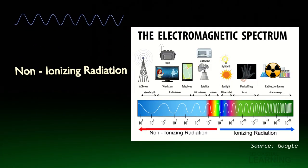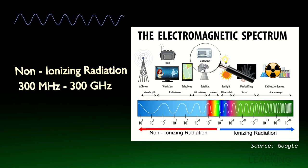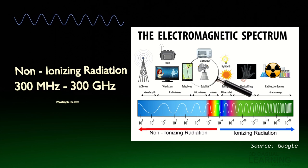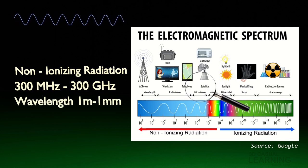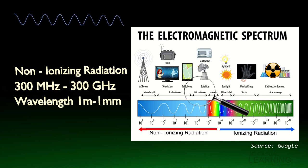Microwave is a type of non-ionizing electromagnetic wave. It has a frequency ranging from 300 megahertz to 300 gigahertz, and wavelengths of 1 meter to 1 millimeter. It is located between radio waves and infrared light in the electromagnetic spectrum.